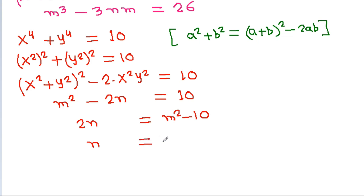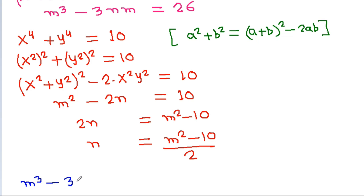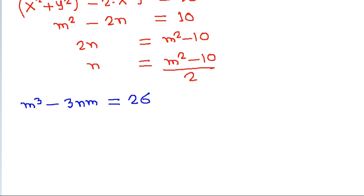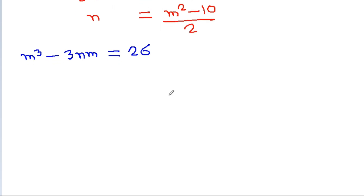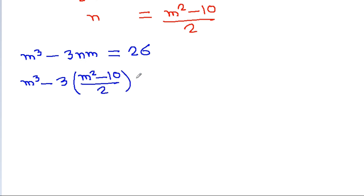So n = (m² - 10) / 2. We have m³ - 3nm = 26, and substituting n: m³ - 3·((m² - 10) / 2)·m = 26.